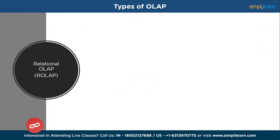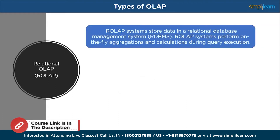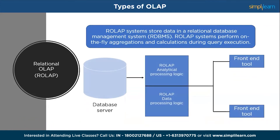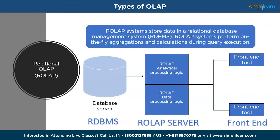Next, Relational OLAP, or ROLAP, stores data in a relational database management system. Instead of pre-aggregating data, ROLAP performs on-the-fly aggregations and calculations during query execution. ROLAP provides more flexibility in handling large datasets and complex data relationships. It is suitable for applications requiring detailed ad-hoc analysis across multiple dimensions. However, ROLAP systems may experience slower query performance than MOLAP, mainly when dealing with complex queries involving large volumes of data.